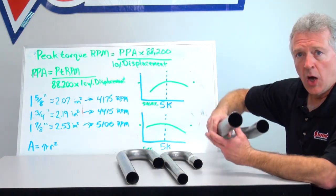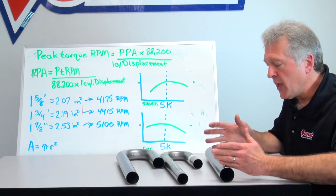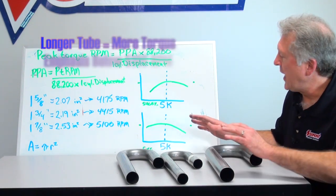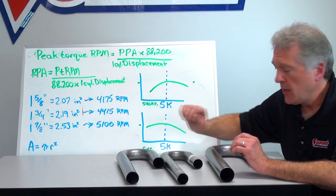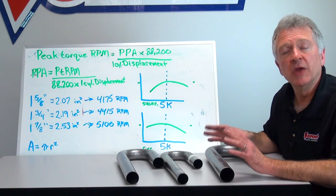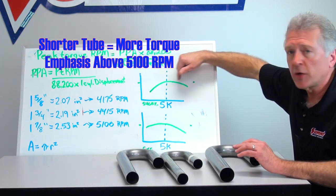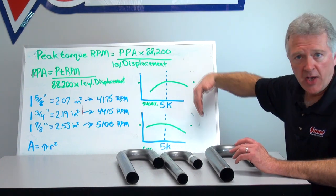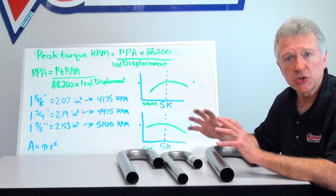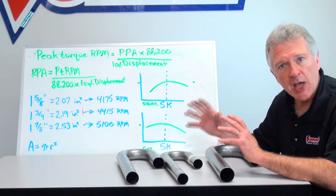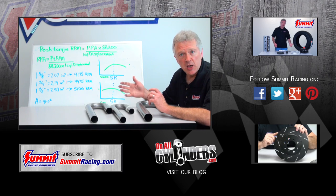Now I can tailor what's going to happen with my 1-and-7/8 primary tube by thinking about length. If I extend and make my primary tube longer, I'm going to add more emphasis below 5,000–5,100 RPM and add a flatter torque curve on that side. If I shorten the primary tube length, I'm going to emphasize a flatter curve and more torque available on the higher RPM side of 5,000–5,100. Next time we'll look at collectors and maybe some exhaust wave theory, and I'll hopefully explain some timing events as it involves your exhaust system. If you like this Quick Flick, please post down below — thank you for watching.